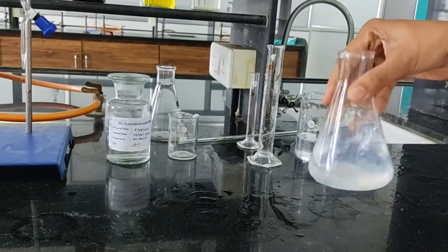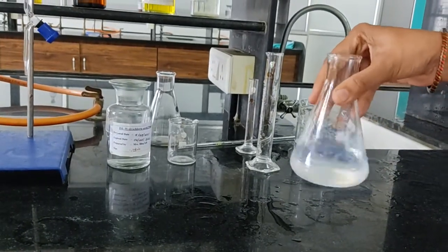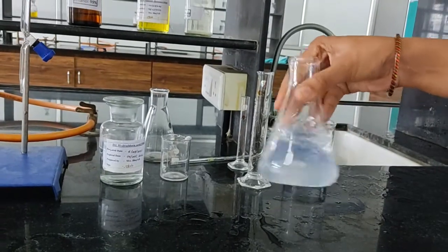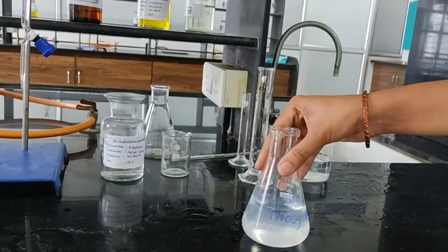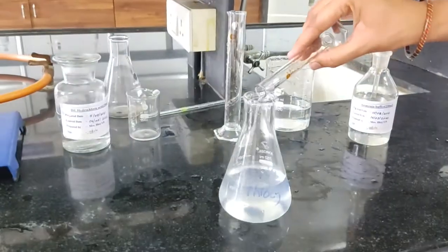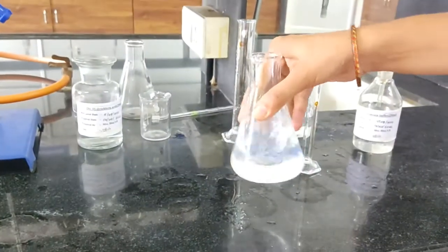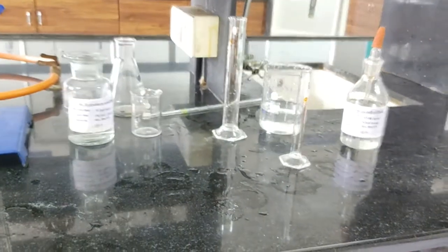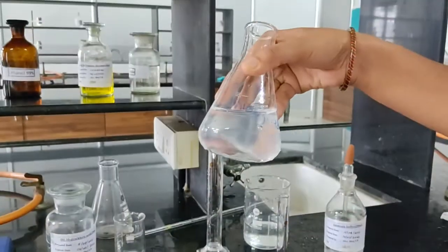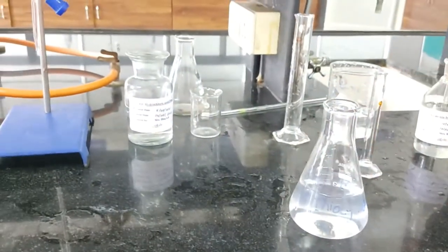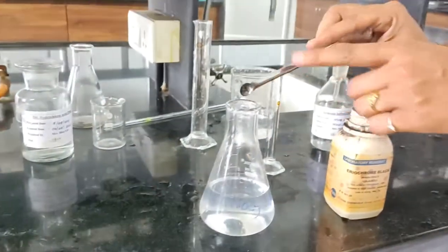And again add sufficient ammonia buffer pH 10 to dissolve this precipitate. 5 ml in excess. So the precipitate gets dissolved into ammonia buffer solution. Here all the precipitate is dissolved in ammonia buffer having pH 10.